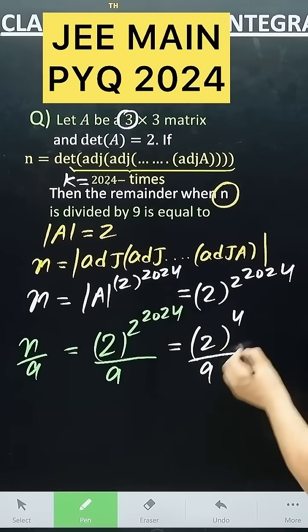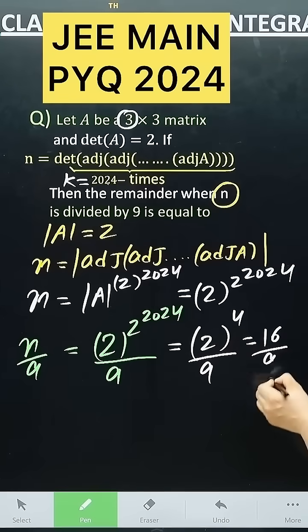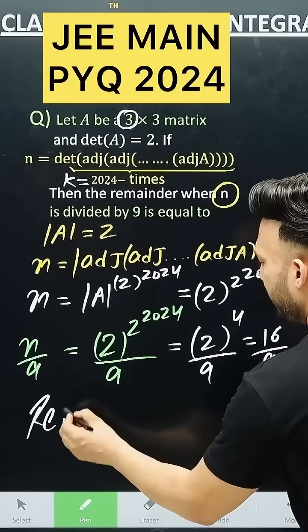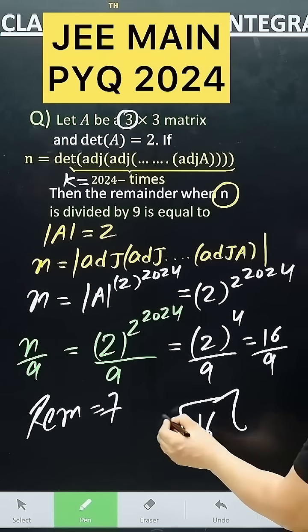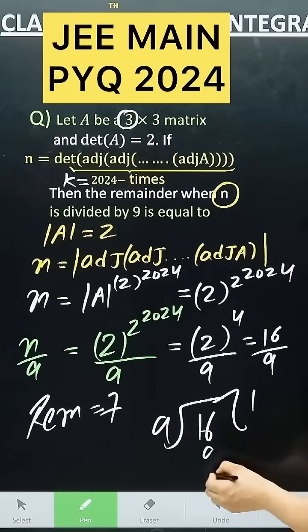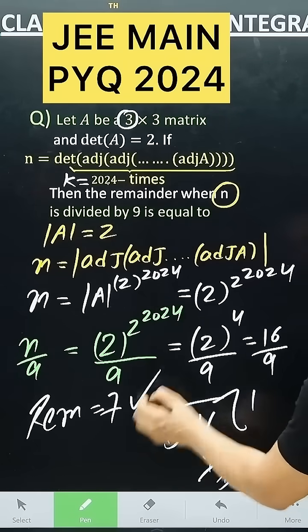So 2 to the power 4 by 9 becomes 16 by 9. Now if you divide 16 by 9, the remainder will come out to be 7. If you divide 16 by 9, what will be the remainder? 7, and 7 is our answer.